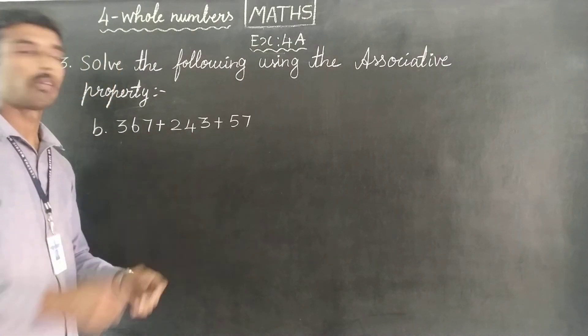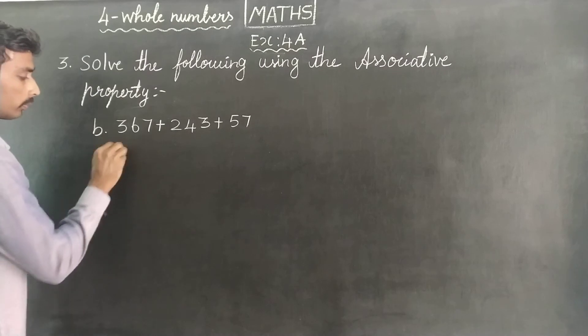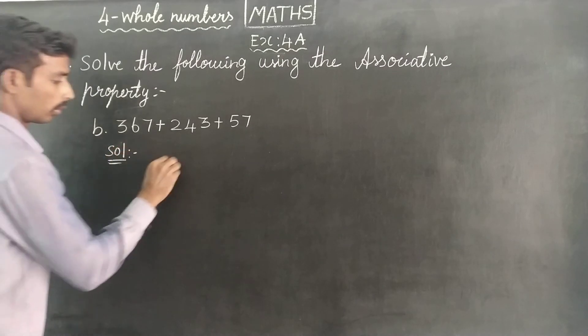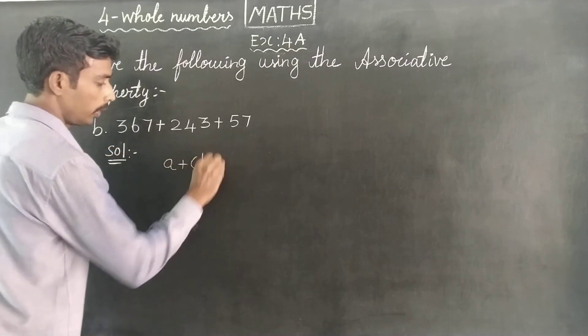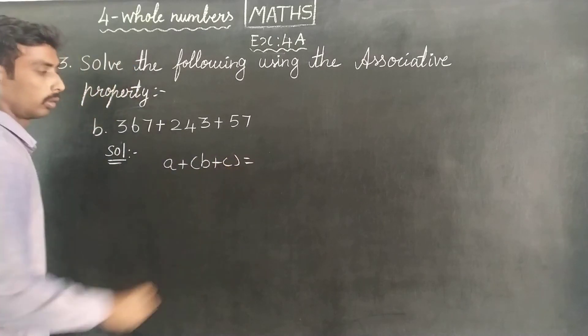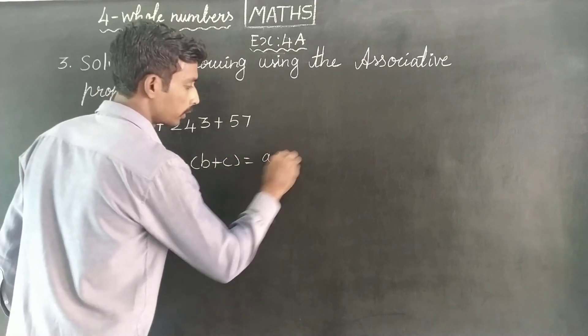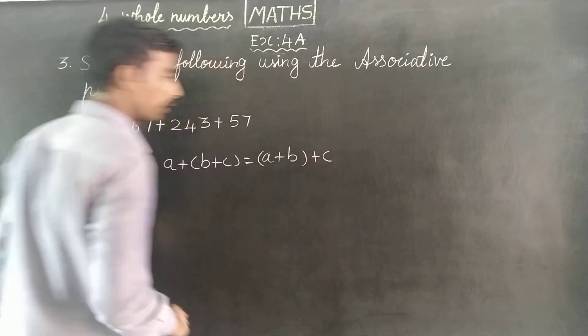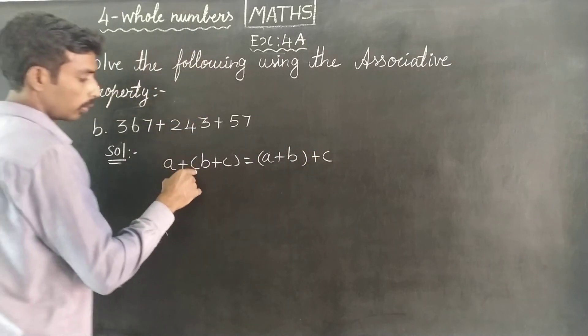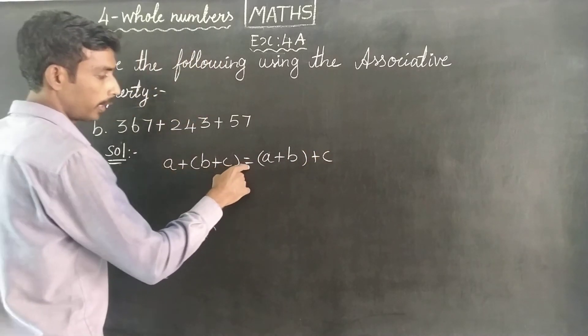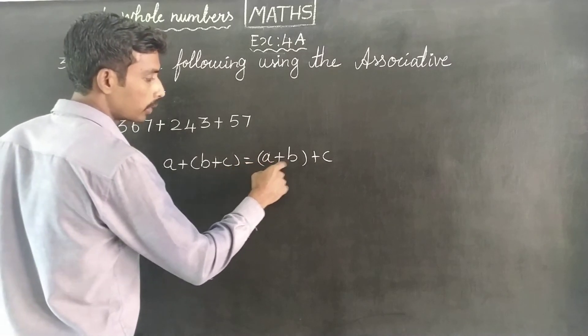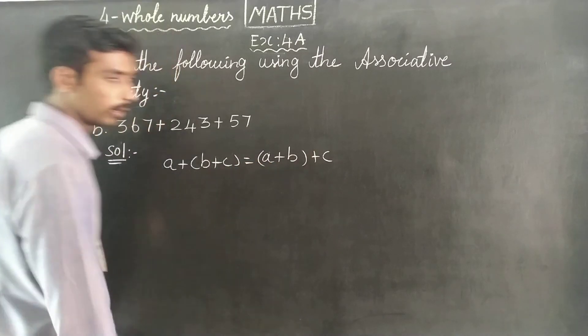The associative property formula is: A plus B plus C equals A plus B plus C. More specifically, A plus open bracket B plus C close bracket equals open bracket A plus B close bracket plus C.